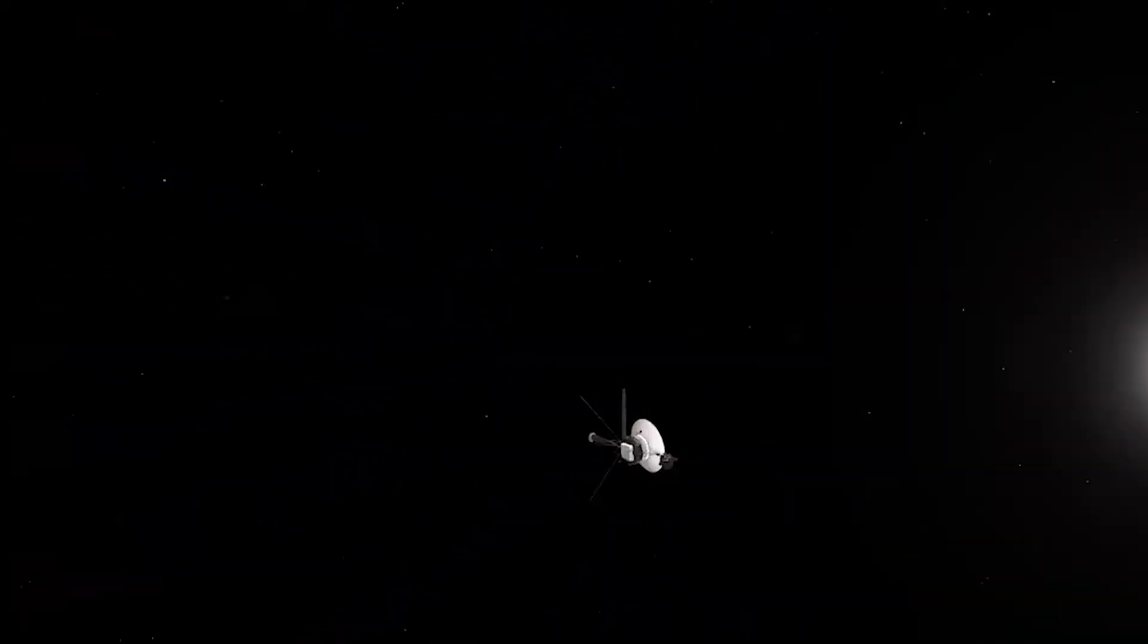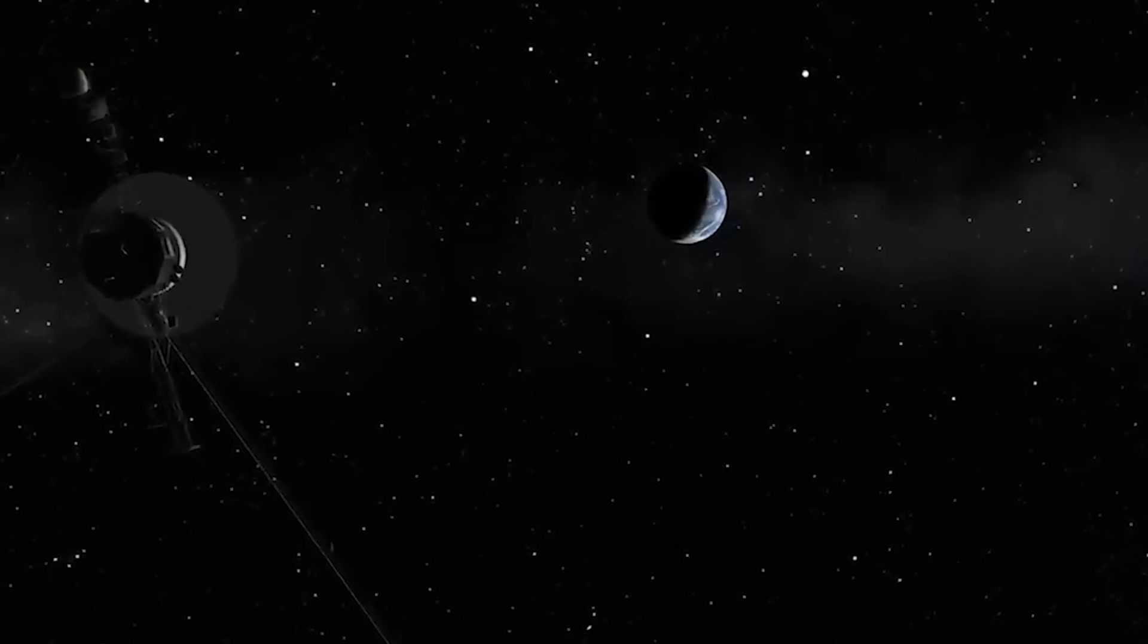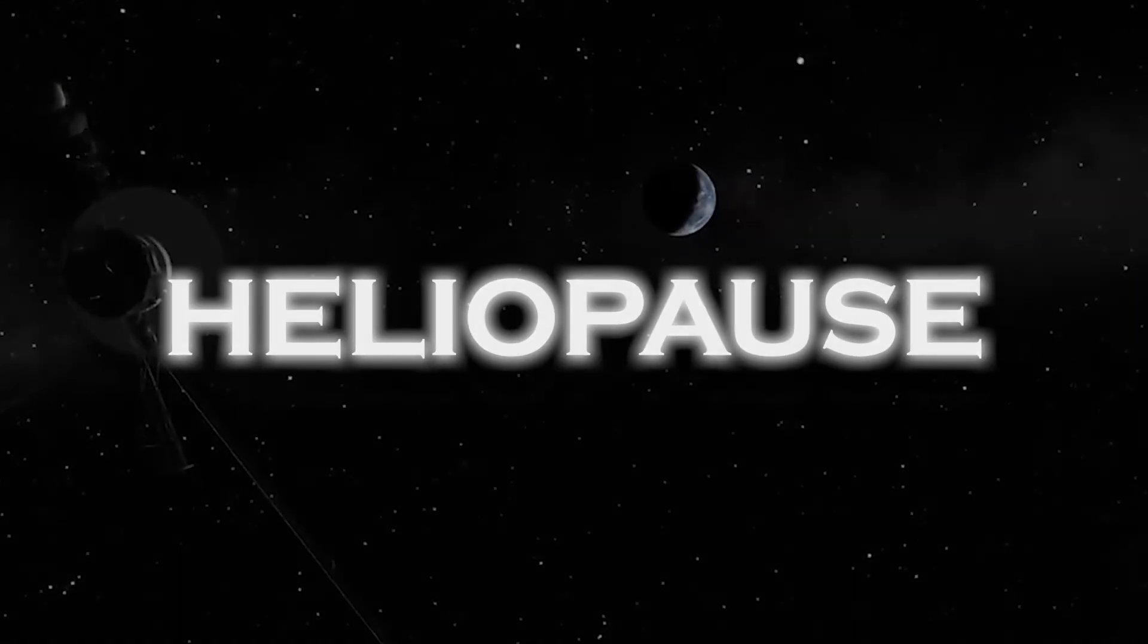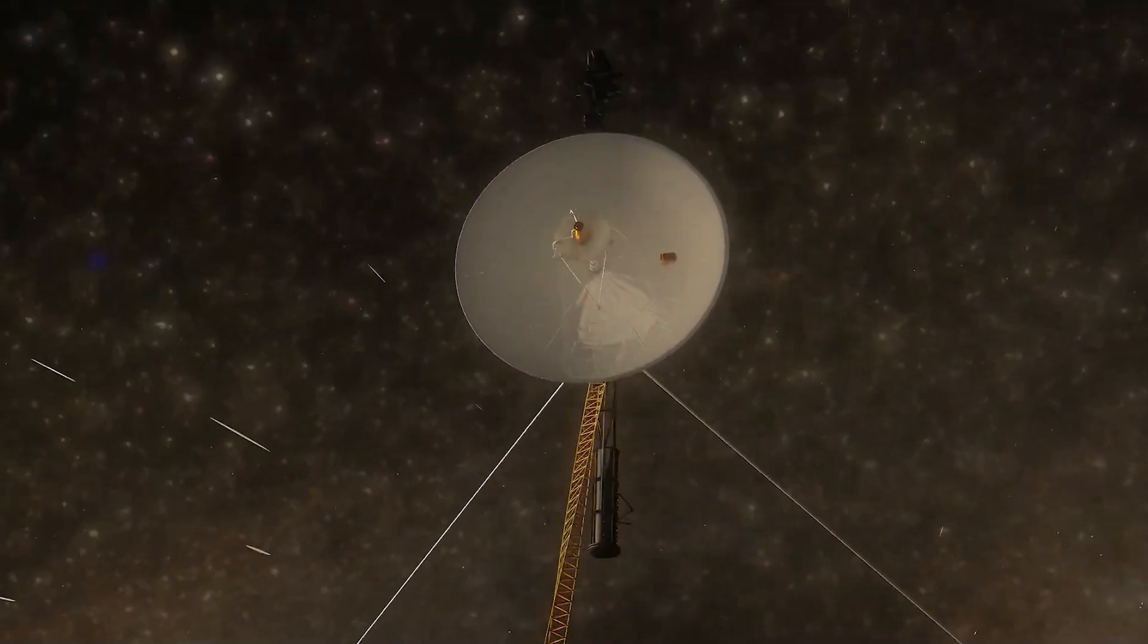Unlike previous years, when we were only able to analyze data within our solar system, thanks to the innovation provided by Voyager, we now have access to data beyond it. In August 2012, Voyager 1 officially crossed the boundaries of the solar system by crossing the heliopause. However, this milestone was not easy to achieve.